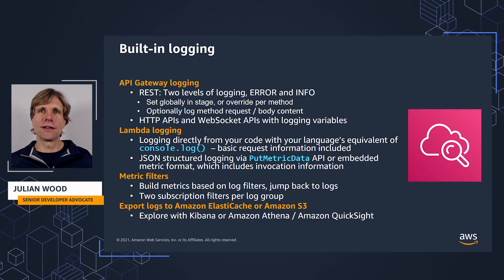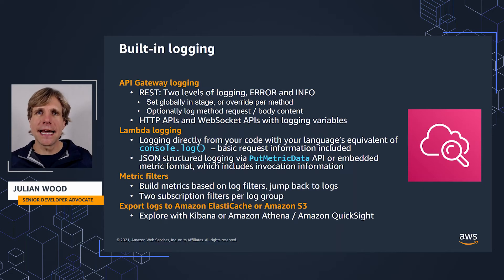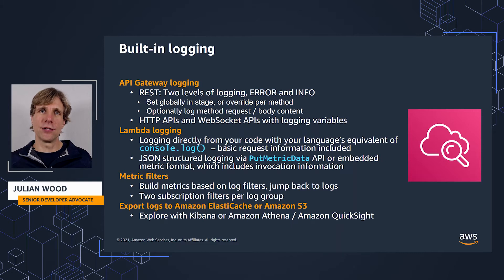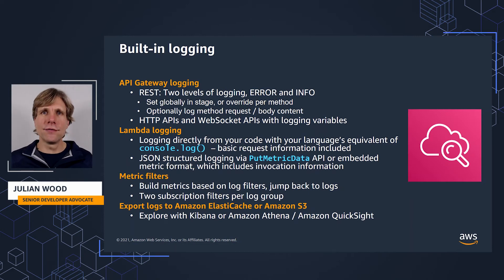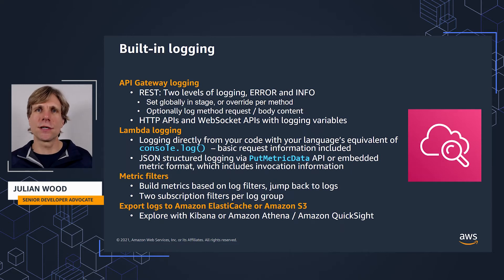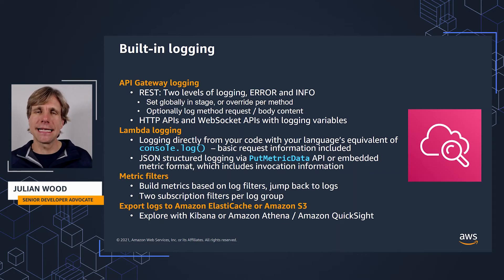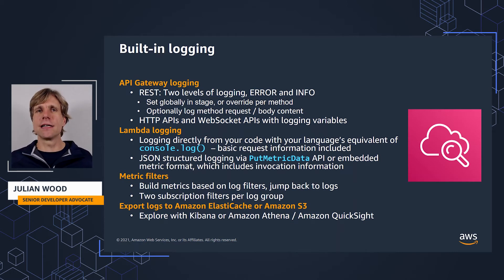CloudWatch Logs generates logs for a number of AWS services. For API Gateway REST API logging, you can log error and info, and this can either be set globally in the stage or for particular methods, and there are some additional options available. HTTP APIs and WebSocket APIs also have a number of logging variables that you can use. For Lambda, you can log directly from within your application code using your language equivalent of console.log in JavaScript or print in Python to send a message to CloudWatch Logs, and this is synchronous. You can also create JSON-structured logging using either the PutMetricsData API calls or the new Embedded Metrics format from the logs from your code, and this includes function invocation information.